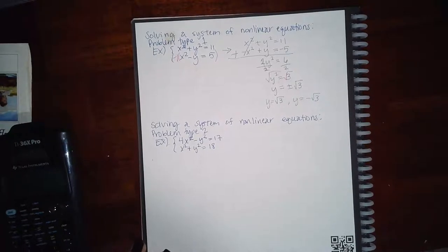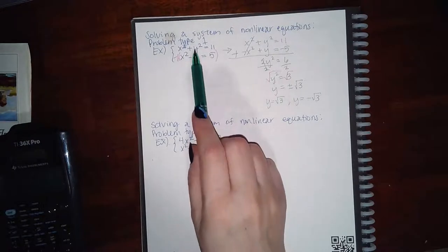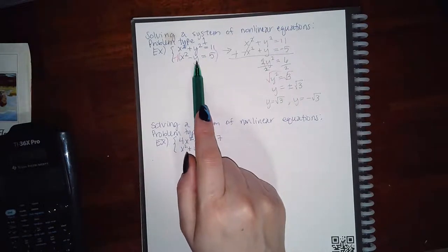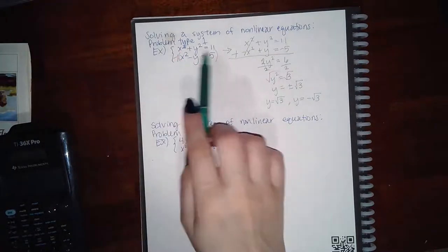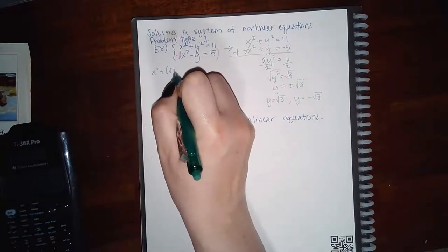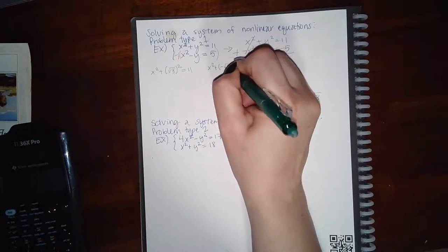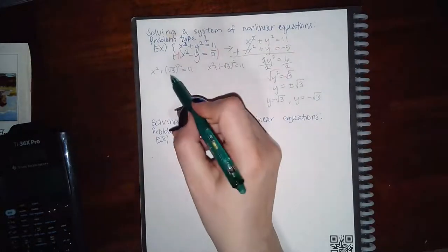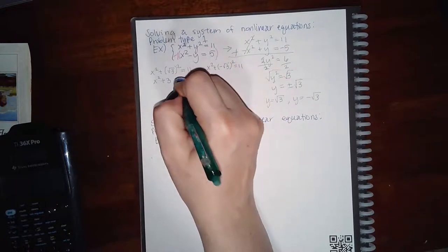Now I still have to calculate what x² is. Neither equation directly says x equals something, so I'll choose the top equation to substitute into. If I plug a square root into the bottom one, I'd have to take the square root of a square root, which won't be clean. So plugging into the top: x² + (√3)² = 11, and also x² + (-√3)² = 11. When you square a square root, the root just goes away, giving x² + 3 = 11.